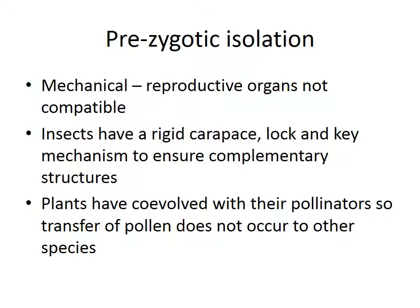More prezygotic isolation barriers: mechanical isolation — the reproductive organs are simply not compatible, they're the wrong size. Insects have a very rigid exoskeleton or carapace, so there has to be a lock-and-key mechanism to ensure complementary structures. Plants generally have co-evolved with their pollinators, so the transfer of pollen doesn't occur to other species. It could be just a mechanical problem preventing mating from occurring.